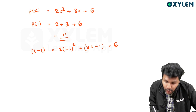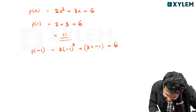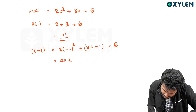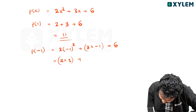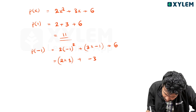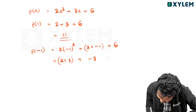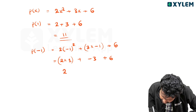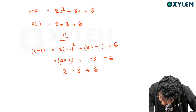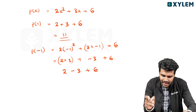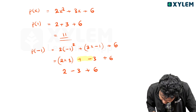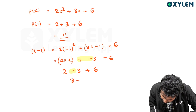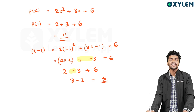P of minus one: two into minus one squared is two into one, which is two. Plus three into minus one, that is minus three. Plus six. So two minus three plus six — the answer is five.